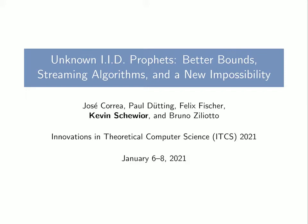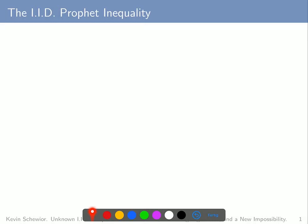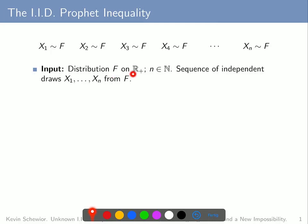In this paper we revisit profit inequalities for IID random variables from an unknown distribution and consider the three aspects mentioned in the title. For a little background I will first talk about the IID Profit Inequality, that is the profit inequality for IID random variables from a known distribution. This inequality refers to the following mathematically very clean setting: there is a distribution f on the positive real numbers and a natural number n known up front, and a decision maker is presented with a sequence of independent draws x1 up to xn from this distribution f.